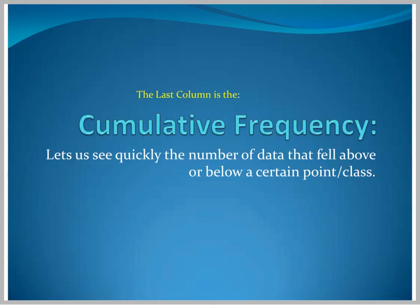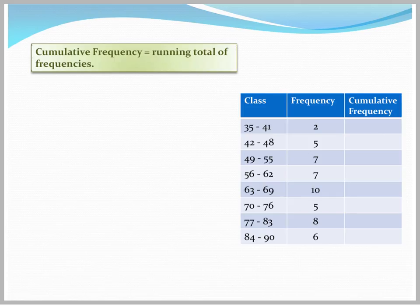Our last column is the cumulative frequency column. This column lets us quickly see the number of data that fell above or below a certain point or class. The cumulative frequency is basically a running total of all the frequencies. This is probably the easiest one to calculate. We just total up the frequencies and just keep them going.